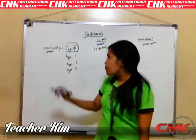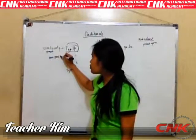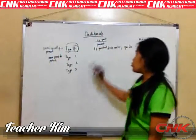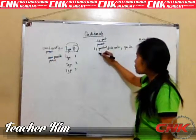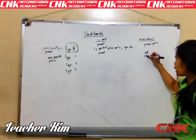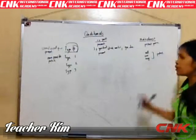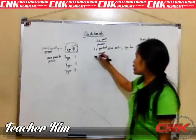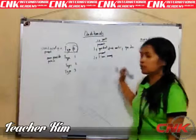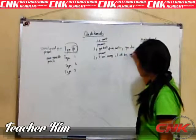Now let's proceed with Type 1. With Type 1, it is more possible. Why is it more possible? Because it is going to happen in the future. So in the if-part, you're going to use the present form of the verb. And in the main clause, you can use will, can, or may — because these are going to happen in the future. I'll give you an example: if I have money, I will buy a car.